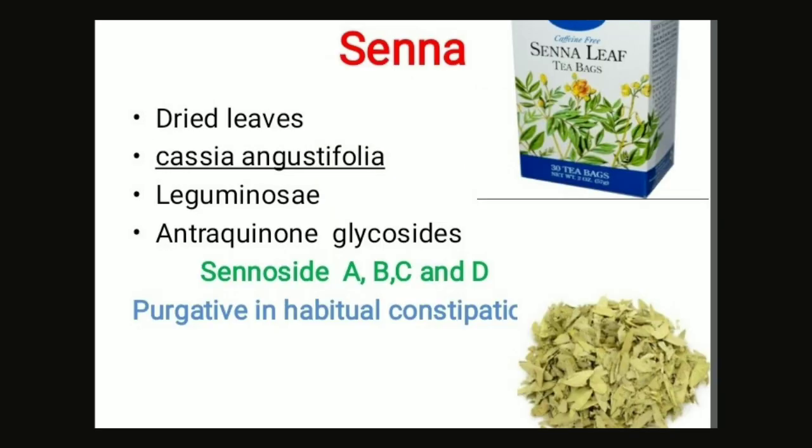Now I'm going to tell you about the crude drugs that contain glycosides: senna and digitalis. Senna consists of the leaflets of Cassia angustifolia. Senna's family is Leguminosae. Senna contains anthraquinone glycosides, namely sennoside A, B, C, and D. Senna is used as a purgative in habitual constipation.